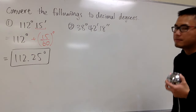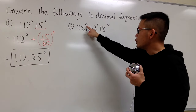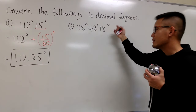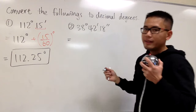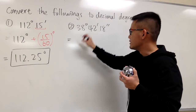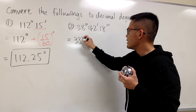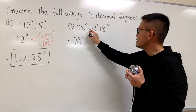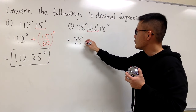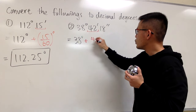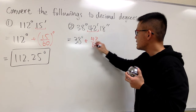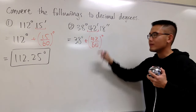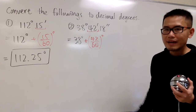For the second one, we have 38 degrees, 42 minutes, and 18 seconds. We want to end up with degrees. So 38 degrees is already good. For 42 minutes, we add 42 over 60 to get the degrees — we divide by 60 and we will have the degrees.